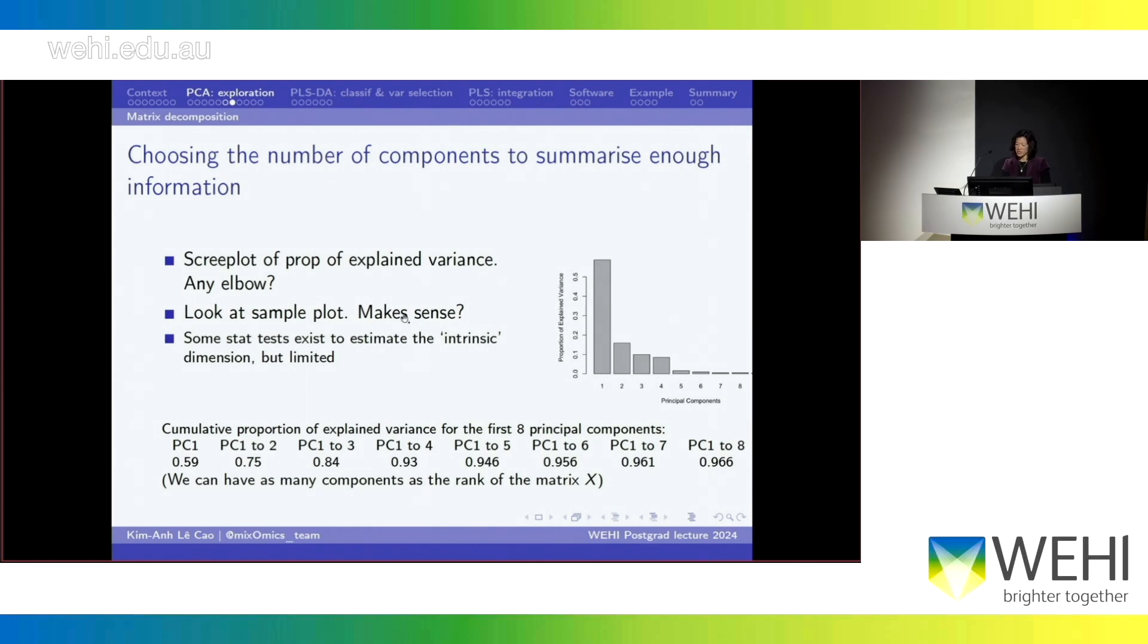So, either you use the elbow method, and in that case, I would use only one component. Or you can say, well, actually, with one component, the visualization is going to be very hard because we're going to have 1D visualization, so maybe you want two. So, there's a bit of soft touch on how you choose those components. But just remember that PCA is an explorative method. So, you're not inferring anything from a PCA output. You're just saying, this is what I can see from the data. This is the sources of variation I can interpret from this data. They are statistical tests who actually help you to decide the number of components, but I wouldn't advise you use them because they have a lot of, they're very limited for big data.